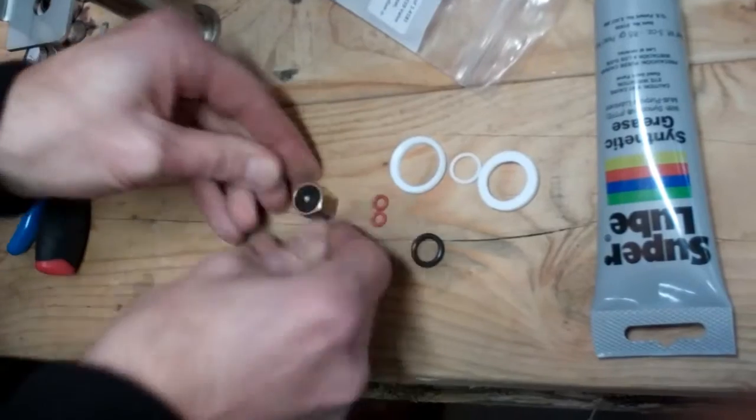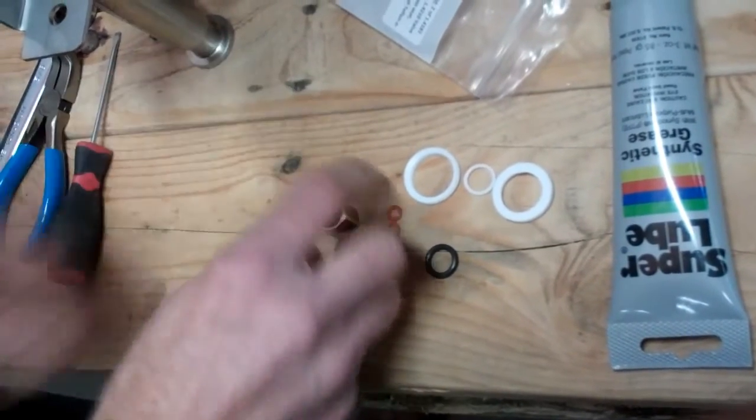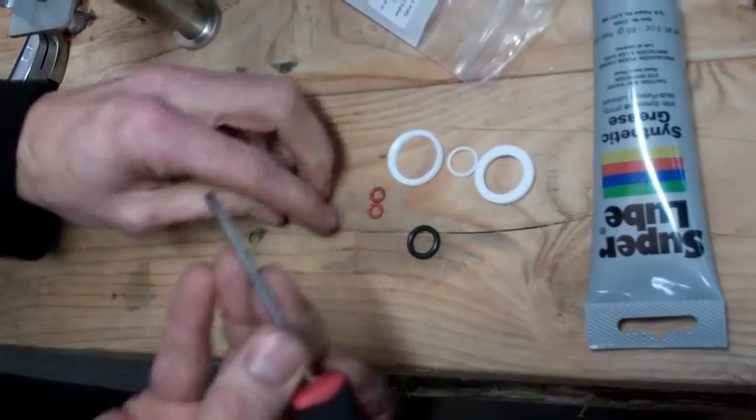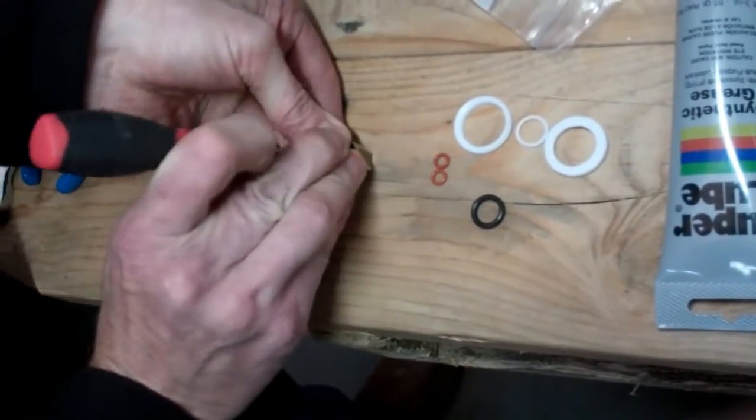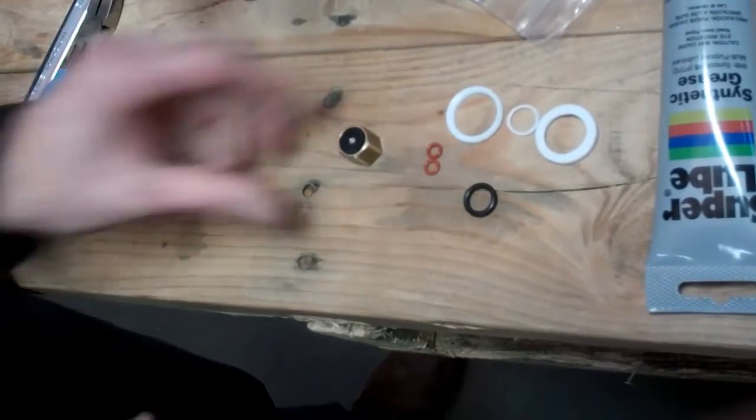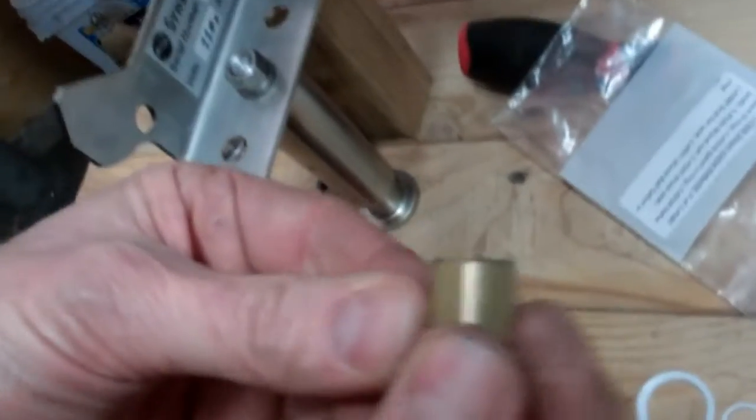Press it in with your fingers. It has air trapped behind it. So if you take a very small screwdriver and slide it in between the rubber and the valve body and press down, then you can get it in there nice and flat.